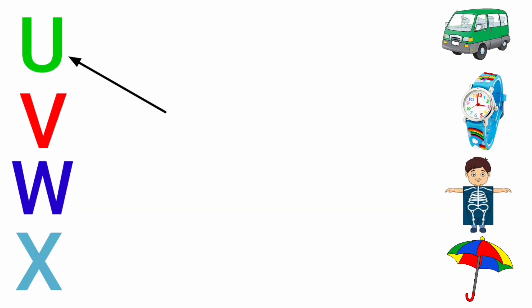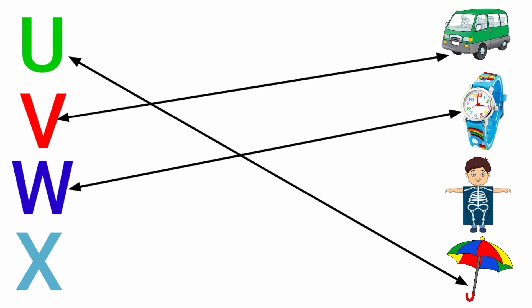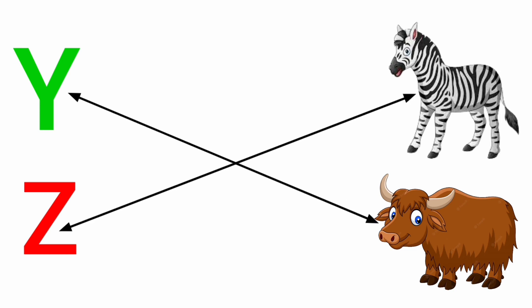U for umbrella, V for van, W for watch, X for x-ray, Y for yak, Z for zebra.